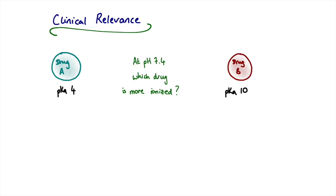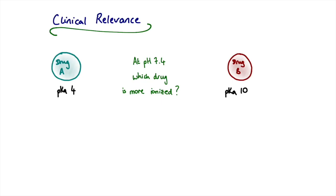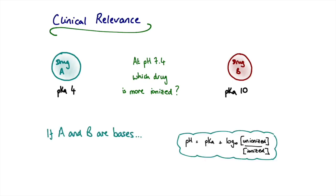Consider drug A with a pKa of 4 and drug B with a pKa of 10. At physiological pH of 7.4, which is more ionized? The answer depends on whether they are acids or bases. If both are acids, the Henderson-Hasselbalch equation shows that for a fixed pH, reducing pKa increases the log term — meaning more ionized drug. So drug A, with the lower pKa, is more ionized when both are acids.